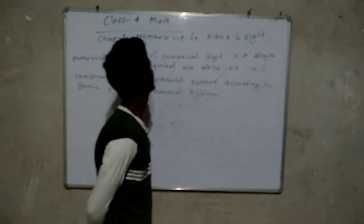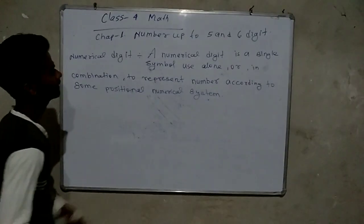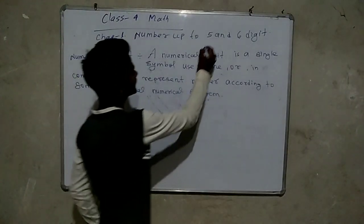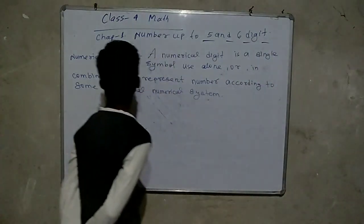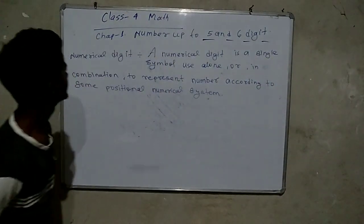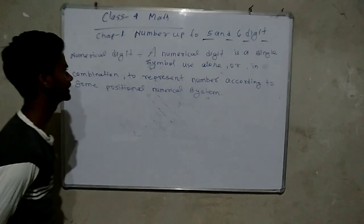Maths Chapter Number 1: Number of 5 and 6-digit Numbers. What is a Numerical Digit?